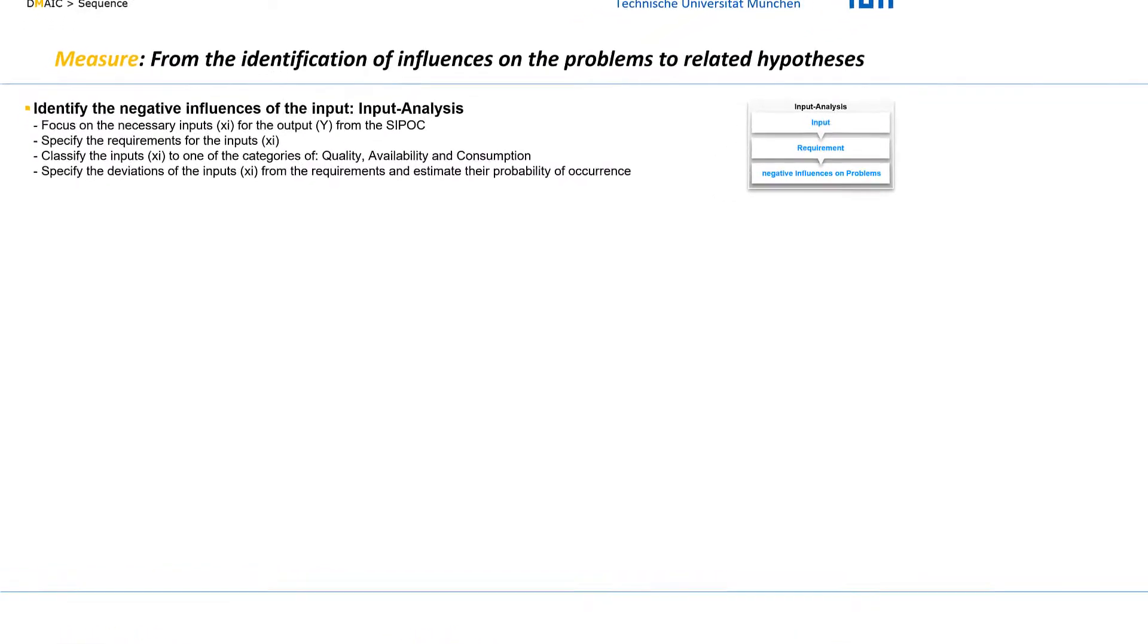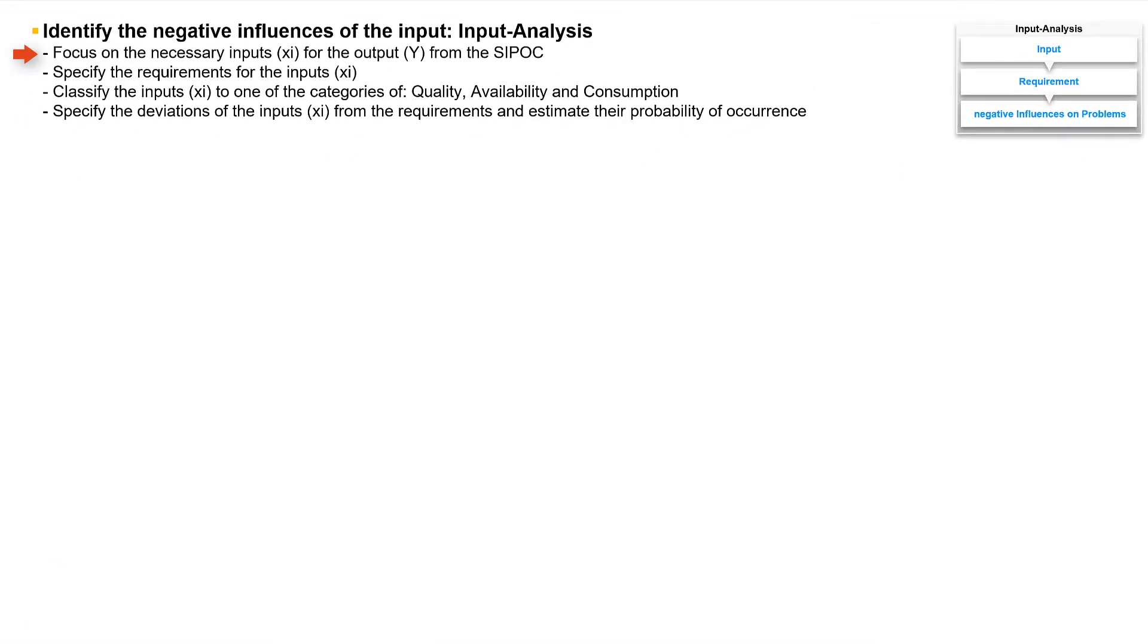We start with the input analysis and focus on the inputs already defined in the SIPOC. We will specify our requirements on the inputs and classify them to one of the categories Quality, Availability and Consumption. We will also specify the deviations from the requirements and estimate the probability of their occurrence.